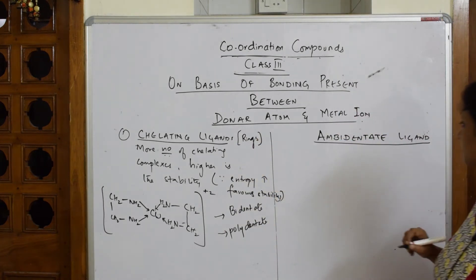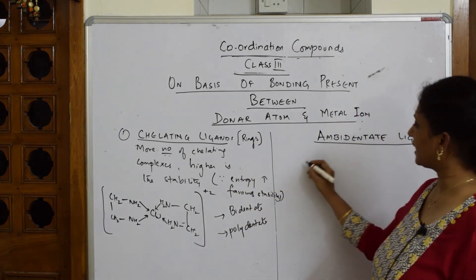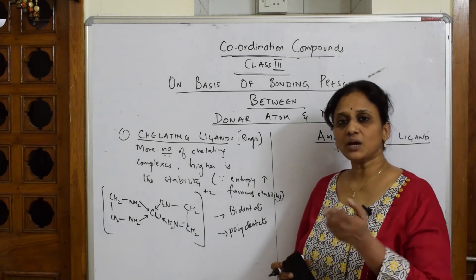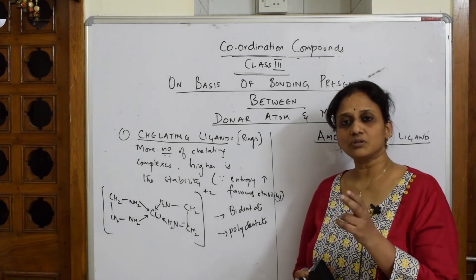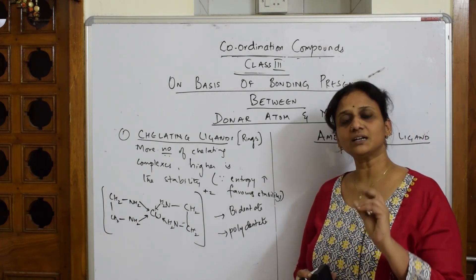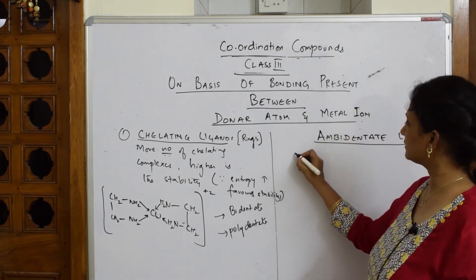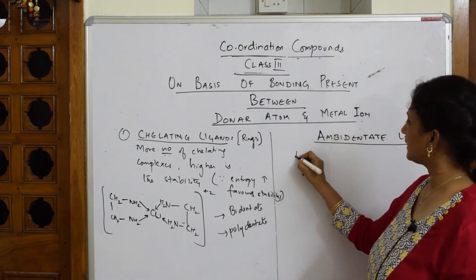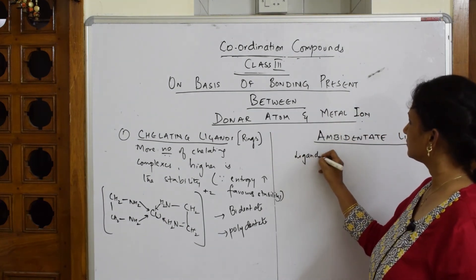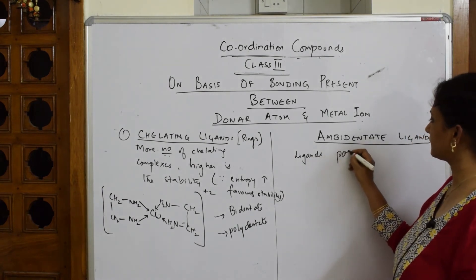Now coming back to ambidentate ligands. Ambidentate ligands are those which have two donor sites — meaning the same ligand can attack or bond with the metal atom from two different atoms. These are ligands possessing two donor sites.